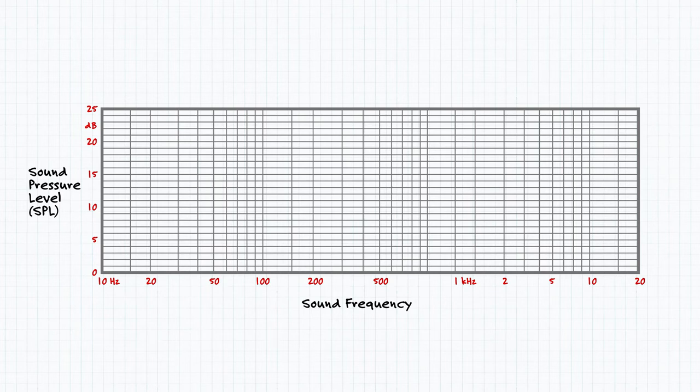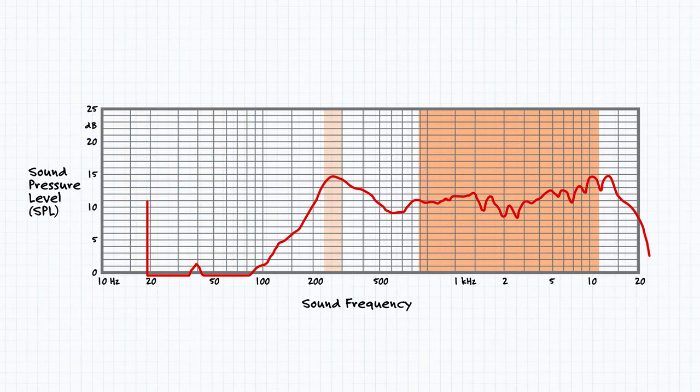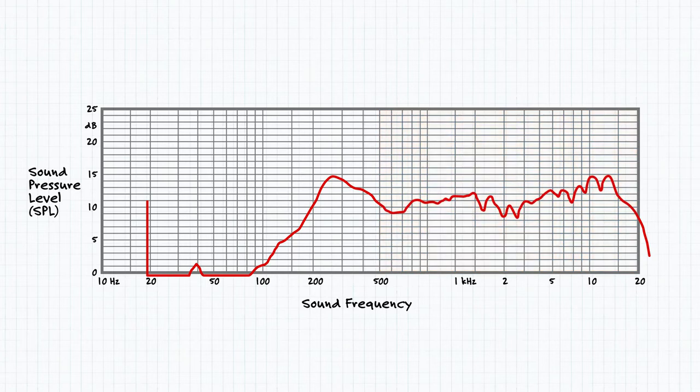To test this, the speaker is given a constant power input at different frequencies, and the output is measured. For this example, you can see that it can't reproduce much below 100 Hz, peaks at a little less than 300 Hz, and then is fairly linear in its output between 500 Hz and 20 kHz. We can tell that the resonant frequency of the speaker is at that peak directly below 300 Hz, the frequency at which the speaker naturally wants to vibrate.